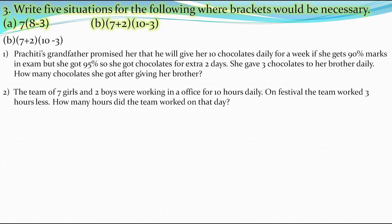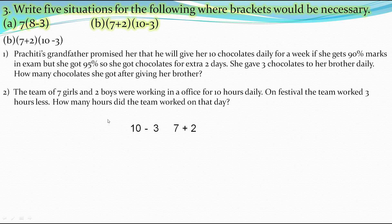The second situation: a team of 7 girls and 2 boys were working in an office for 10 hours daily. As there are two types of persons, we add 7 plus 2. On a festival, the team worked 3 hours less, so we subtract 3 from 10. To find how many hours the team worked on that day, we multiply the answers of both expressions, placing them in brackets.